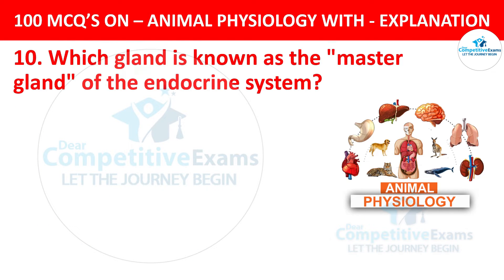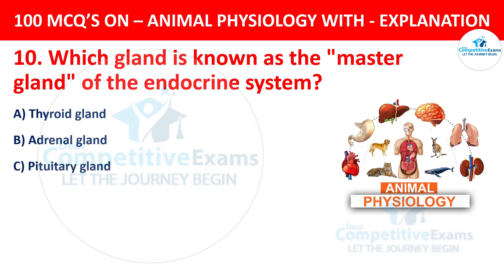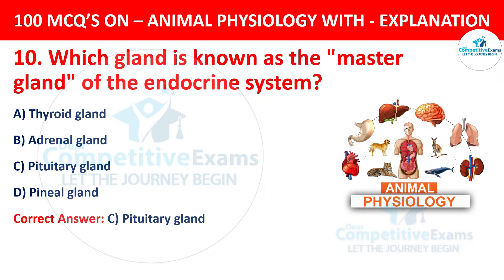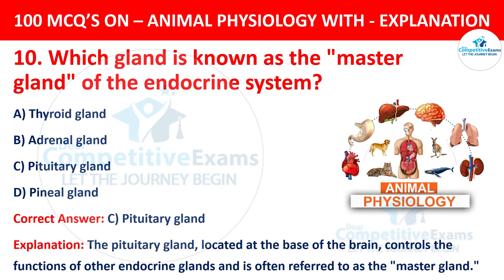Question number 10. Which gland is known as the master gland of the endocrine system? The options are thyroid gland, adrenal gland, pituitary gland, or pineal gland. The correct answer is C, pituitary gland. The pituitary gland, located at the base of the brain, controls the function of other endocrine glands and is often referred to as the master gland of the endocrine system.